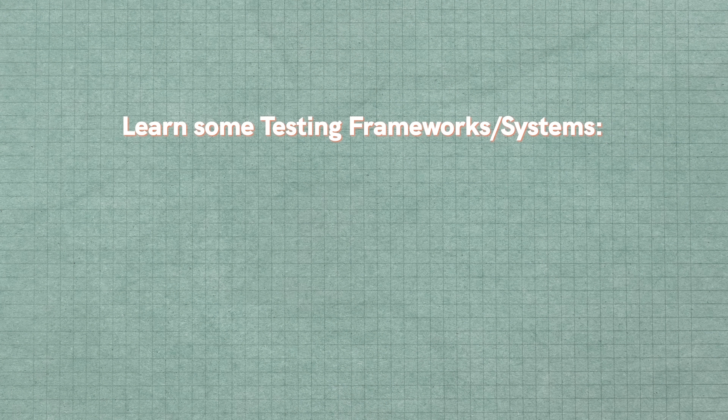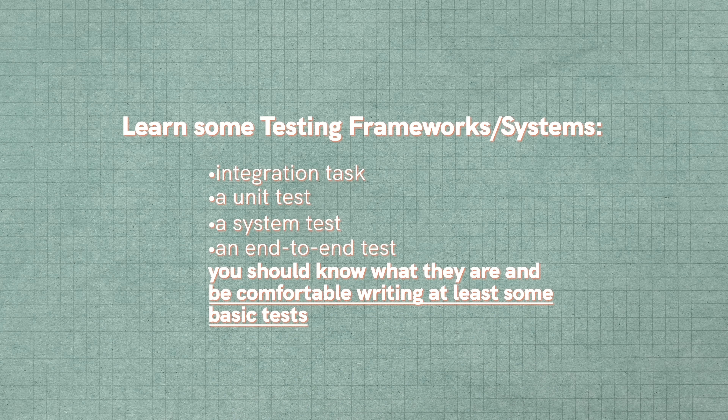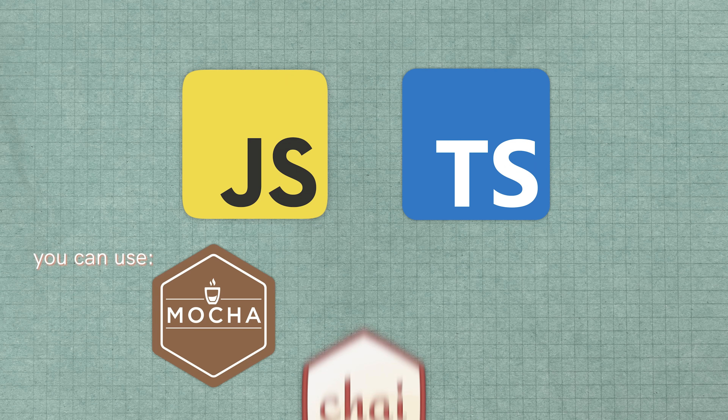Moving on, we have testing and testing frameworks. Testing is a pain, especially for smaller projects, but as your project gets larger, it is so important to have good test coverage and test all the critical components of your application. You need to learn about some type of testing framework and be familiar with different types of tests: integration tests, unit tests, system tests, end-to-end tests. You're not always going to use all of these, but you should know what they are and be comfortable writing at least some basic tests. For Python, you can use something like PyTest; for JavaScript or TypeScript, something like Mocha, Chai, or JUnit.